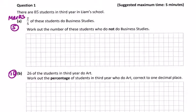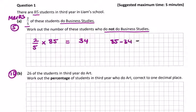Question 1: 85 students in third year in Liam's School and two fifths do business studies. They're testing that you read the question carefully. Work out the number that do not do business studies. Two fifths times 85, or you can get three fifths straight away. Two fifths of 85, type it into your calculator. 85 divided by 5 is 17 times 2 is 34. So 85 minus 34 is 51 do not do business studies.